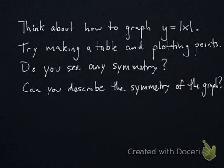Now I want you to try to analyze the relationship y is equal to the absolute value of x. Try to come up with a visual representation of this. So, I would make a table, pick some numbers for x, plug them into the relationship and see what the corresponding number is for y. That will make a point that you can plot on your grid. Take a look if there's any symmetry and see if you can describe the symmetry.